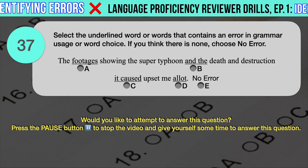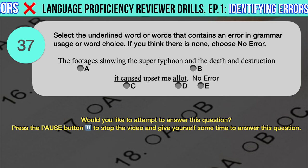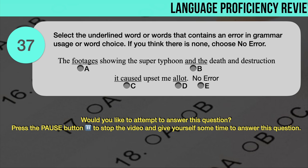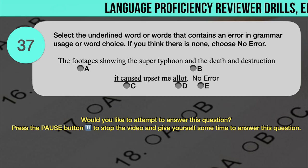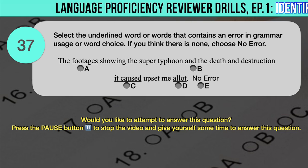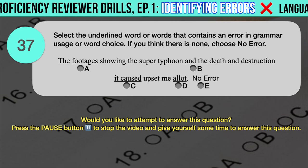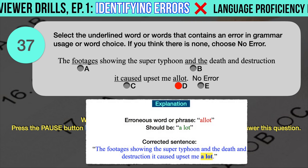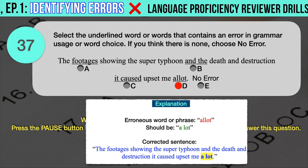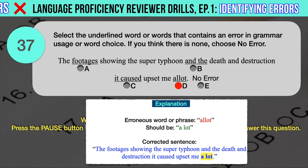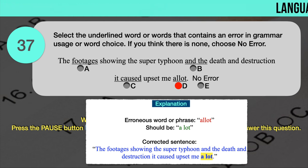Drill question number 37. 'The footages showing the super typhoon and the death and destruction it caused upset me a lot.' The underlined words are: A. Footages, B. And the, C. It caused, D. A lot. The correct answer is D. 'A lot' — a verb meaning 'assign or distribute' — is sometimes mistakenly used instead of 'a lot,' which is a pronoun meaning 'many or a great amount,' or an adverb meaning 'very much or often,' which is the correct usage based on context.